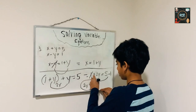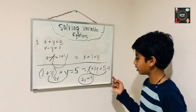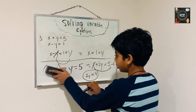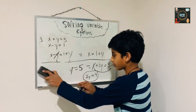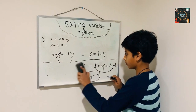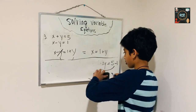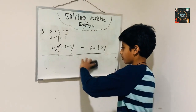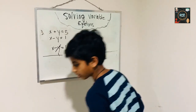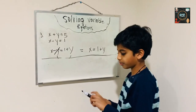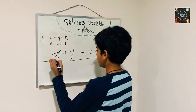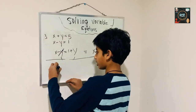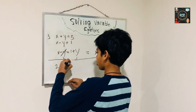Our equation now is 2y equals 4, and we have to use this to solve for y. So I'm going to show you how to do that.